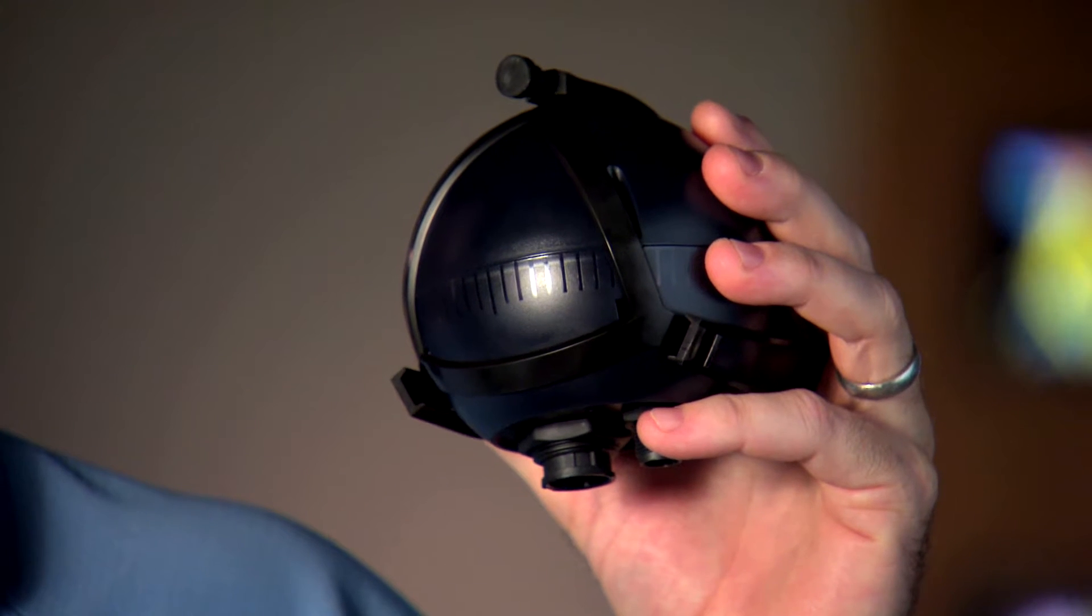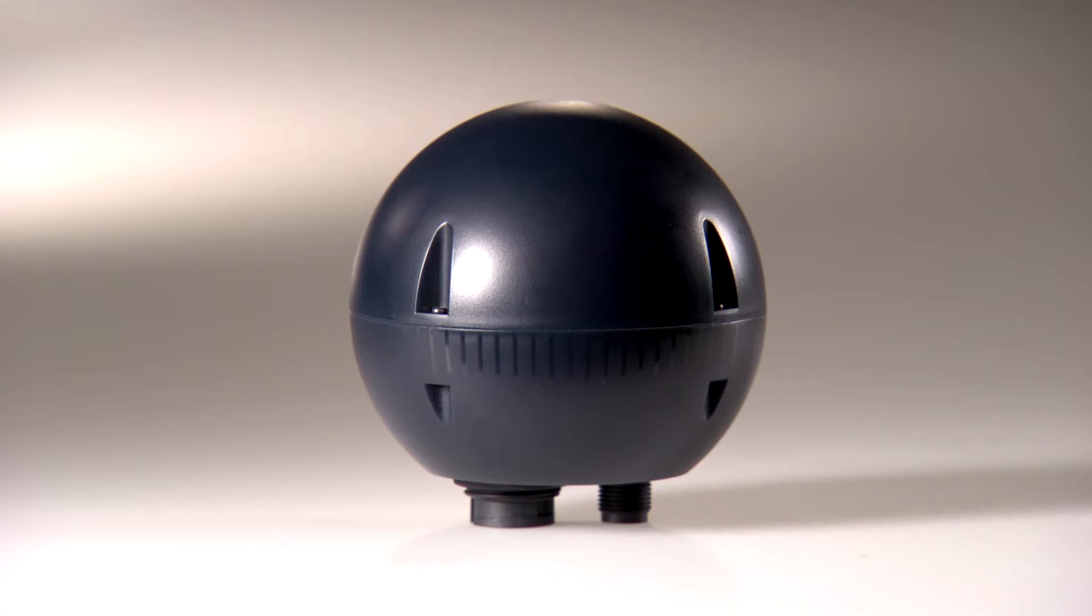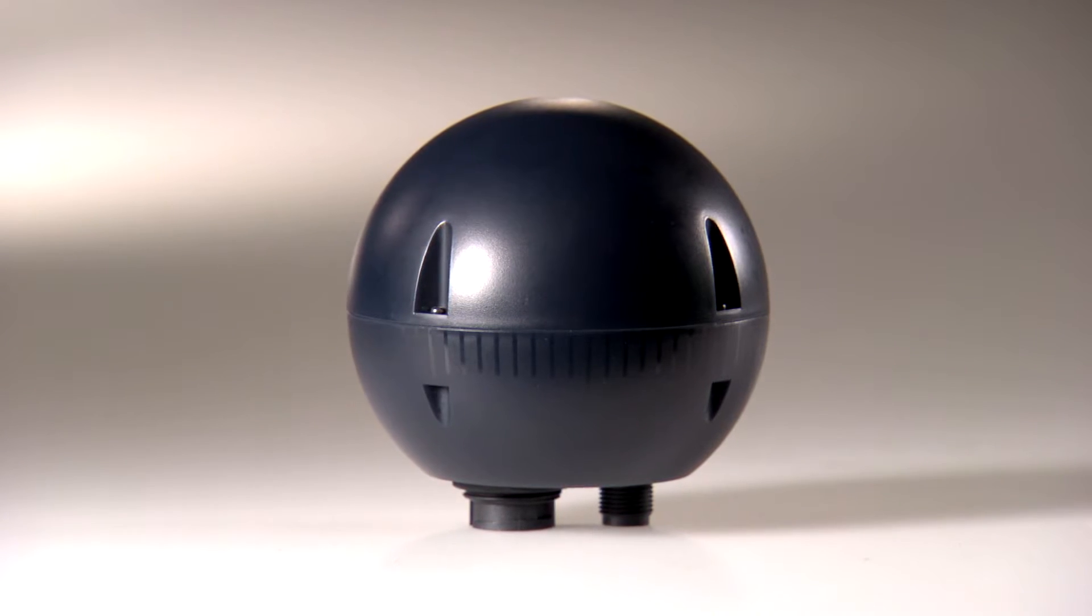First up, the course computer unit, or CCU, is the brains of the system. It contains the sensory equipment used to determine the boat's heading and speed.